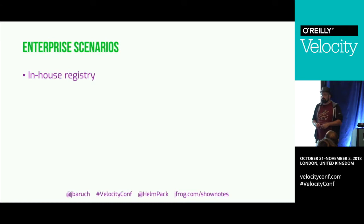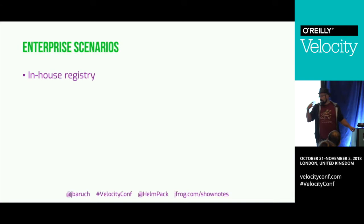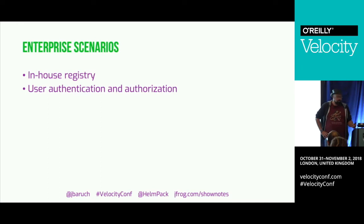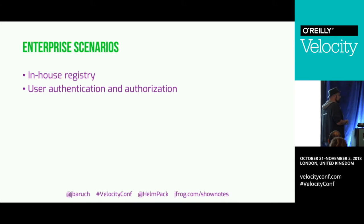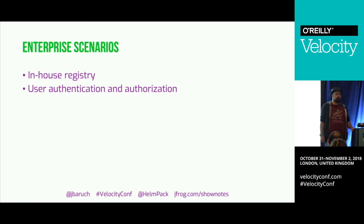Let's talk about enterprise scenarios. The first requirement is an in-house registry, and for that you need user authentication and authorization. This is something Helm used to lack entirely — if you could access the repository, you could download everything from it and upload whatever you liked. That's okay for small teams where you trust people, but in larger organizations people have no idea what they're doing, so it was a real problem.